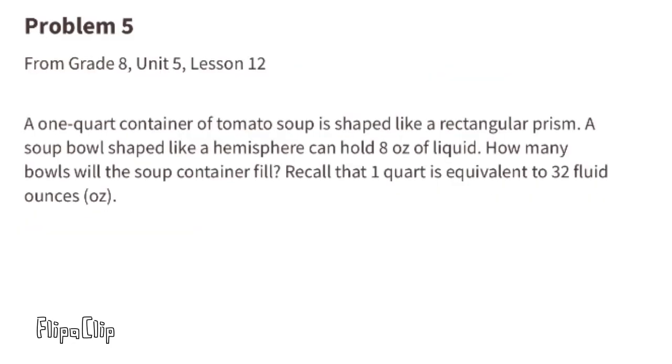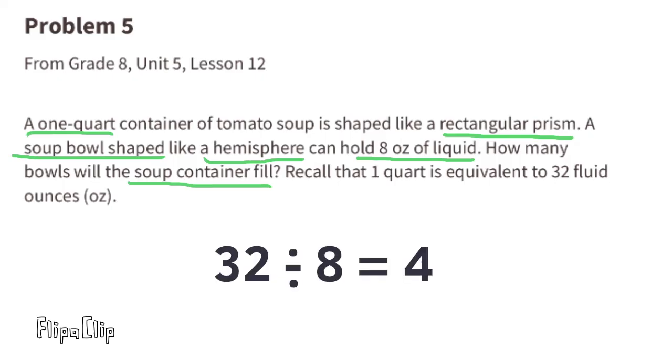Problem number 5 from 8th grade, Unit 5, Lesson 12. A 1-quart container of tomato soup is shaped like a rectangular prism. A soup bowl, shaped like a hemisphere, can hold 8 ounces of liquid. How many bowls will the soup container fill? Recall that 1 quart is equivalent to 32 fluid ounces. Each bowl can hold 8 ounces, and the soup container can hold 32 fluid ounces. So 32 divided by 8 equals 4. The soup container can fill 4 bowls of soup.